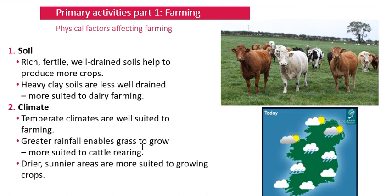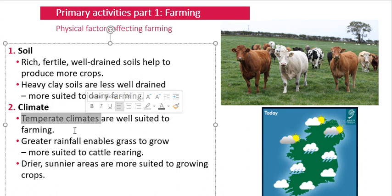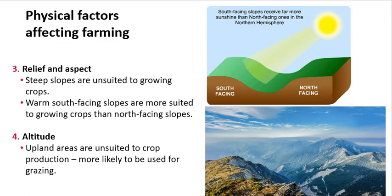How does climate affect farming? In Ireland, we have the perfect climate for growing grass — a lot of rainfall but also some sunny weather. This is more suited to cattle rearing and growing crops. Temperate climates, like Ireland's, are well suited to farming, which is why Ireland is such a significant agricultural country.